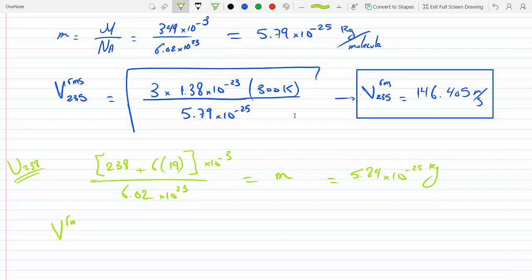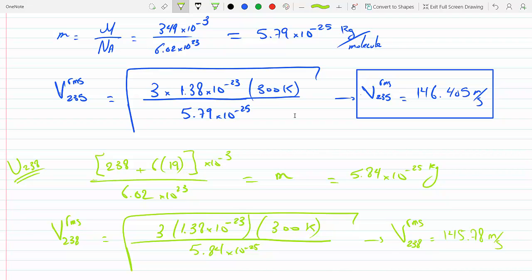So V_RMS for 238 would be the square root of 3 times 1.38 times 10 to the minus 23 times room temperature 300 Kelvin over 5.84 times 10 to the minus 25. Square root this and the answer here gives me V_RMS for the gas containing uranium 238 to be 145.78 meters per second.